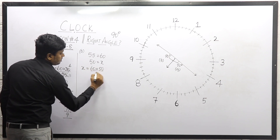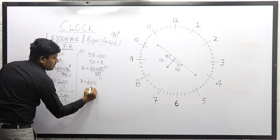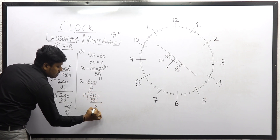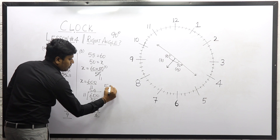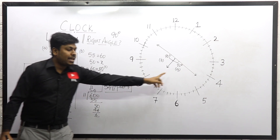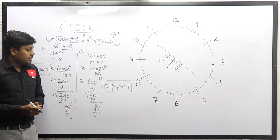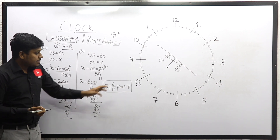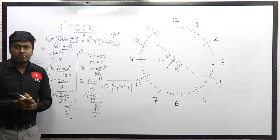For the second possible: X equals 60 × 50 divided by 55. Cancelling on 5 table gives 600 divided by 11. Dividing: 5 times 55, remainder 50; 4 times 44, remainder 6. So the answer is 54 6/11, past 7. First answer is 7 hours 21 9/11th minute, second answer is 7 hours 54 6/11th minute where both hands are at right angle.